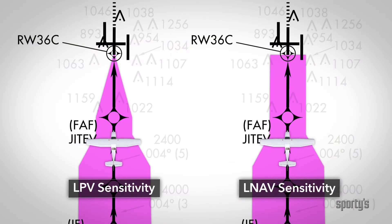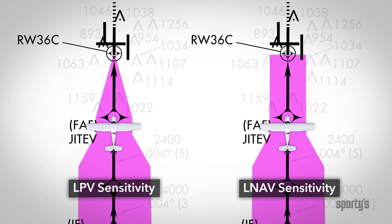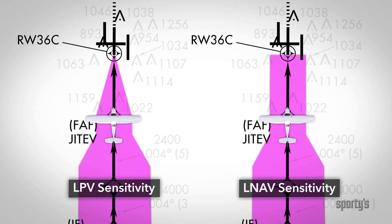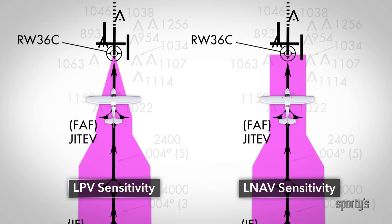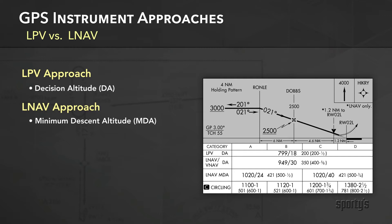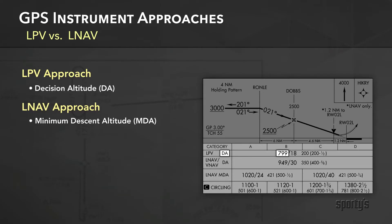The lateral course is more precise than an LNAV-only approach since the course is angular like a localizer, meaning the final approach course width automatically narrows as you approach the runway. Another significant difference between LNAV and LPV is that the LPV approach terminates at a decision altitude or DA, whereas the LNAV relies on a minimum descent altitude or MDA.